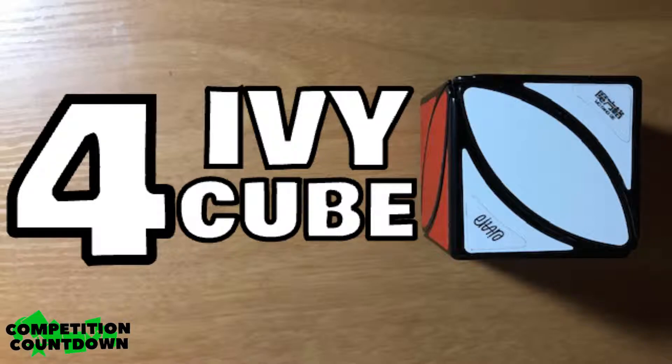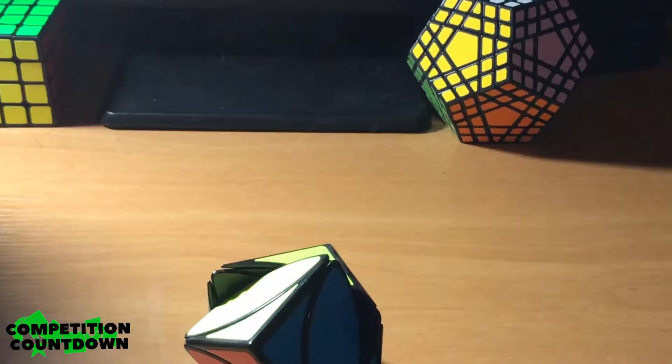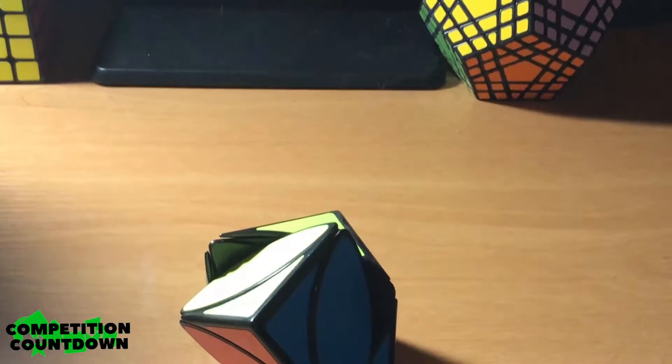Number 4 is the Ivy Cube. This is a puzzle similar to the Pyraminx or Skewb, just easier and less time consuming.